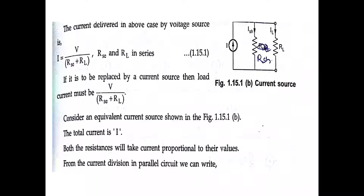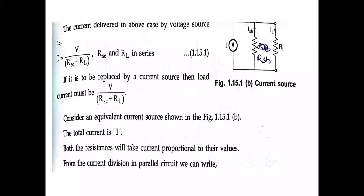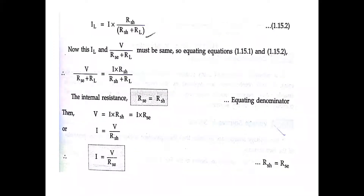Consider the current source: the total current I will be taken by both resistances in proportion to their values — this is the current division rule in parallel. Using the current division rule: IL equals I multiplied by RSH divided by (RSH plus RL). Now IL and V divided by (RSC plus RL) must be the same, so we equate equation 1 and equation 2.